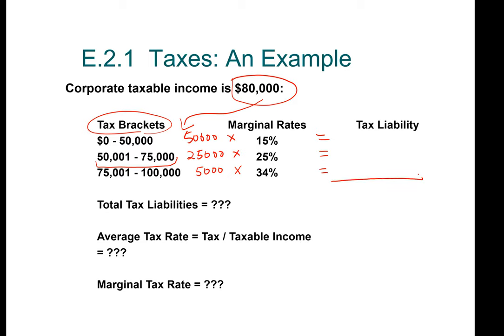Pause the video now and go ahead and compute the tax liability. Are these the answers you got? If so, fantastic. If not, please pause the video again and go back and check your work — there's a good chance you made a simple arithmetic mistake. Our total tax liability is $15,450.